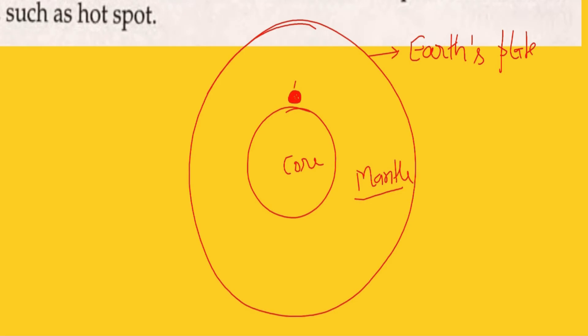This hot magma expands and becomes lighter, starts moving upward, and starts accumulating in this region. It creates a flood of basaltic magma. This magma is basaltic, so it is known as flood basalt, and it keeps on accumulating in this region.